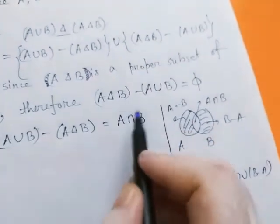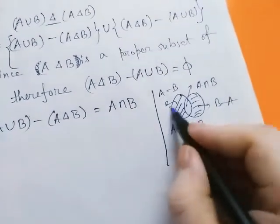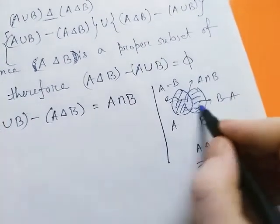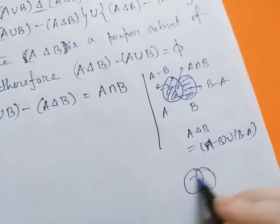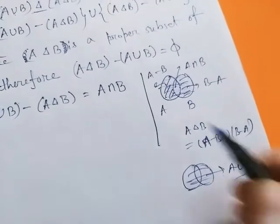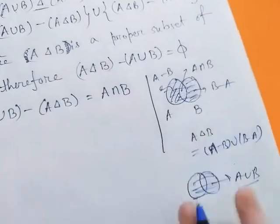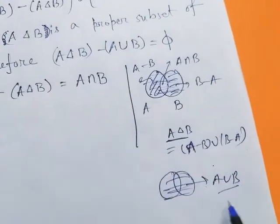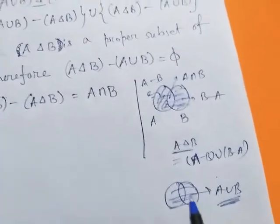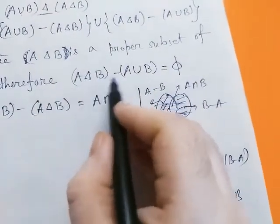A union B - now here the total is A union B. Total is A union B. Now simply we find that A delta B is proper subset of A union B, so obviously A delta B minus A union B equals phi.